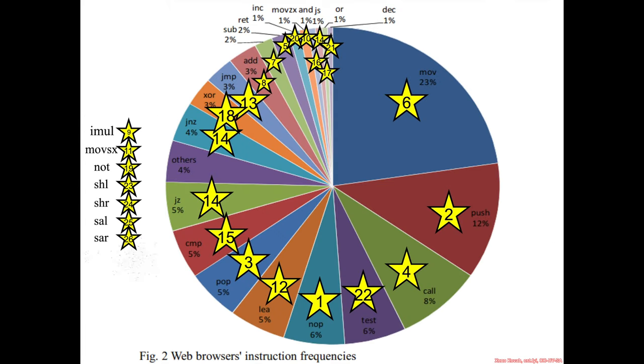And where do they show up? Well, we already know we exhausted everything on the pie chart, so two more others: div and iDiv.